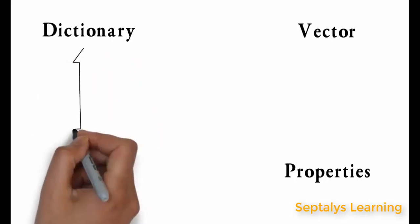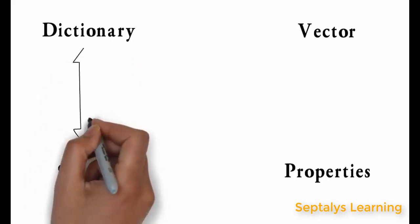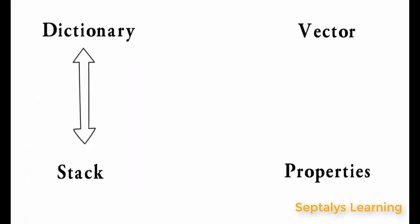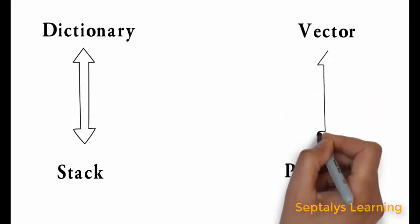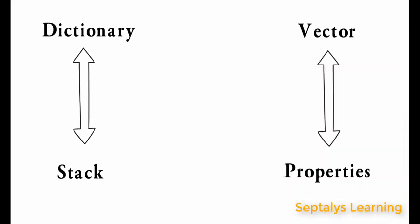The way we use the dictionary class is totally different from the way we use the stack class. And the way we use the vector class is different from the way we use the properties class.